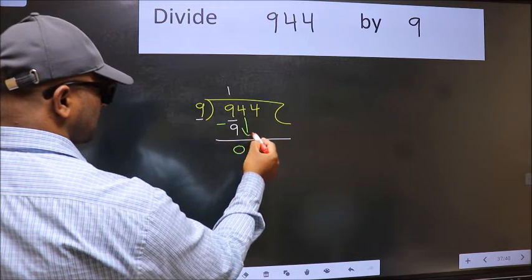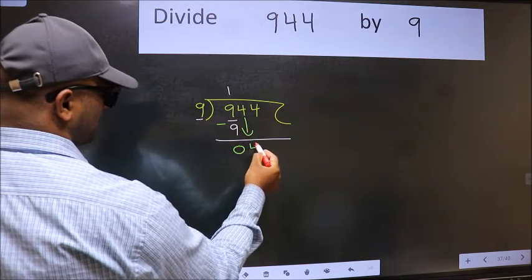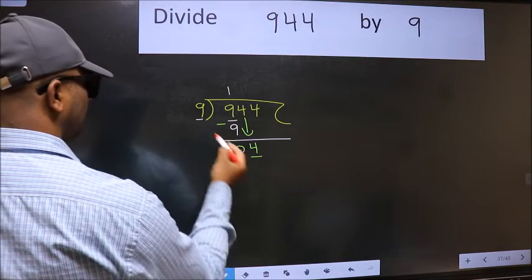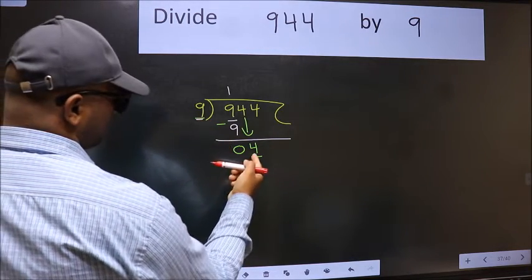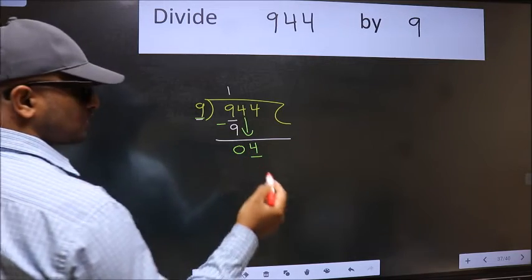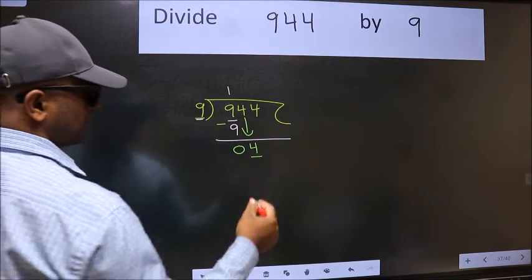After this, bring down the beside number. So 4 down. Now here we have 4 and here 9. 4 is smaller than 9, so we should bring down the second number.